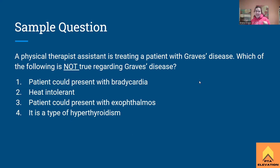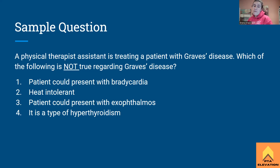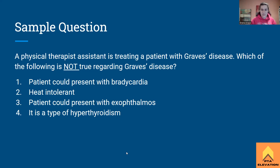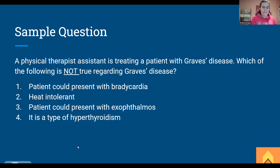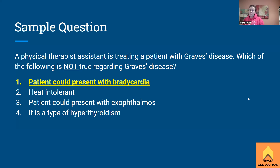Sample question: A physical therapist assistant is treating a patient diagnosed with Graves' disease. Which of the following is NOT true regarding Graves' disease? One — patient could present with bradycardia. Two — heat intolerant. Three — patient could present with exophthalmos. Or four — it is a type of hyperthyroidism. The answer is: patient could present with bradycardia.